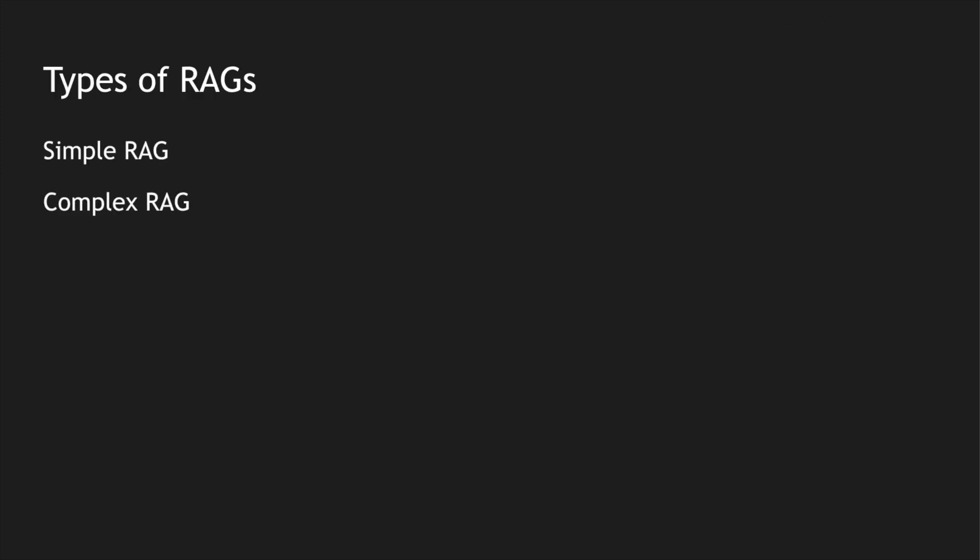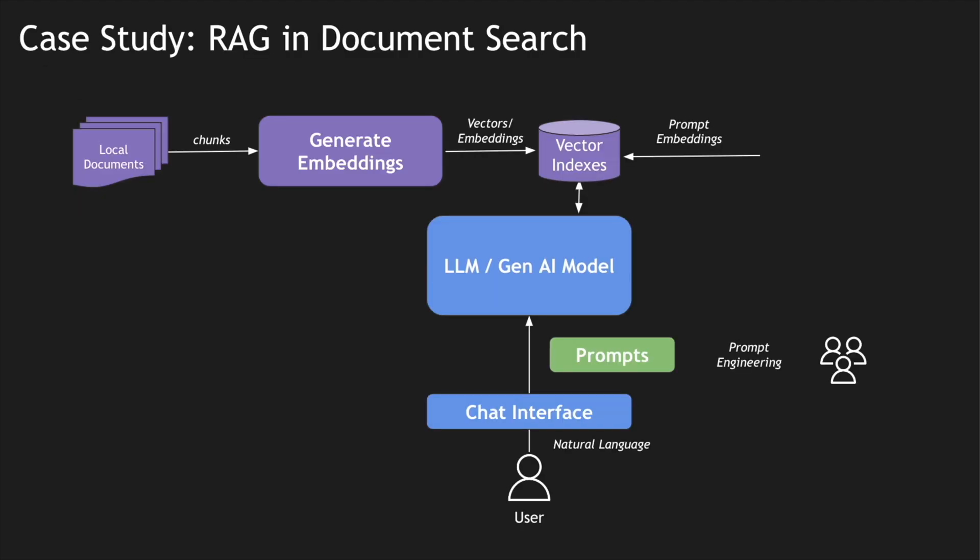Coming to the types of RAG architectures — there are simple and complex RAG architectures. We will look at a simple RAG architecture using an example of a document search. Let's take a chatbot interface where I've created a chatbot to go through my local documents. Imagine I have local documents on my computer in various folders — I created a chatbot I can talk to so I can understand where my documents are or find which document contains specific data. I've fed all these into the LLM using the RAG architecture.